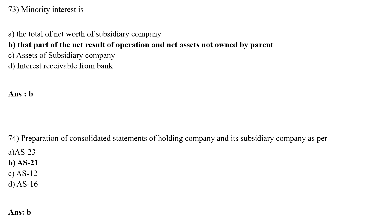Minority interest is that part of the net result of operations and net assets not owned by the parent. Preparation of consolidated statements of holding company and subsidiary company is as per AS 21. The correct answer is Option B — AS 21.